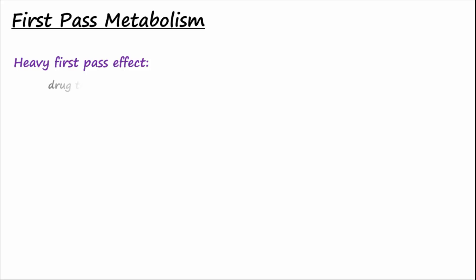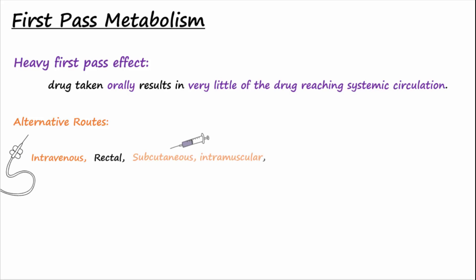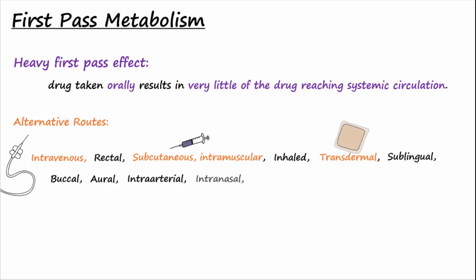Many drugs have what is called a heavy first pass effect, where they are so substantially removed by the liver on the first pass that taking them orally results in very little of the drug reaching systemic circulation. For drugs that undergo a heavy first pass effect, alternative routes may be used for administration. Such routes include intravenous, rectal, subcutaneous, intramuscular, inhaled, transdermal, sublingual, buccal, oral, intra-arterial, intranasal, intraocular, intravaginal, and interarticular.